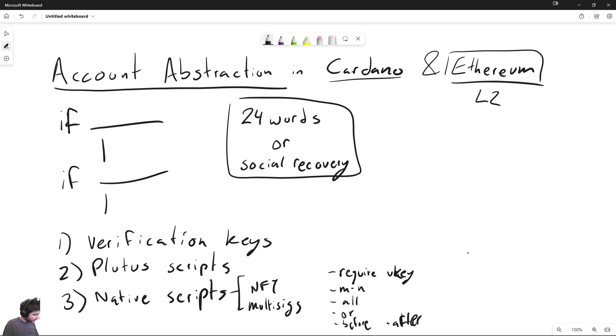And these primitives are fairly useful because this is all you need for multi-sigs and NFTs. Because you can say a multi-sig is just M of N. So for example, three of five require keys. So you require three of five different keys.